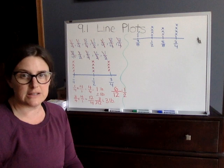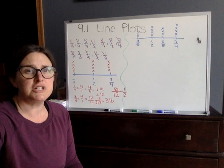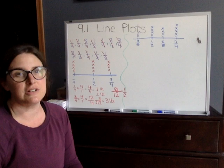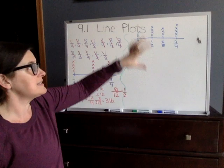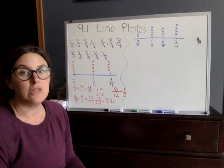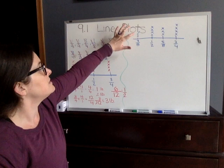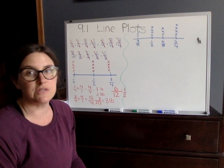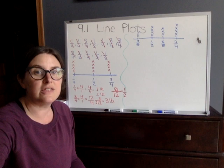Moving to the second question: Julie uses crystals to make a bracelet, and the lengths of the crystals are shown below. It gives you all the different fractions, which I've already put into a line plot. We have four different fractions: three eighths, one half, five eighths, and three fourths — with three, four, three, and four crystals respectively.